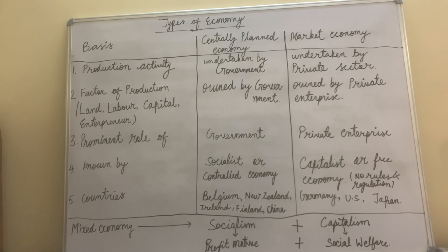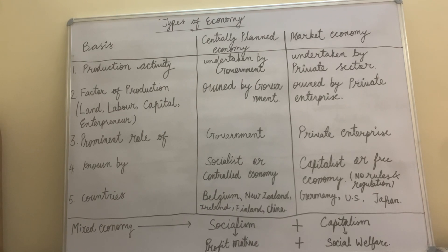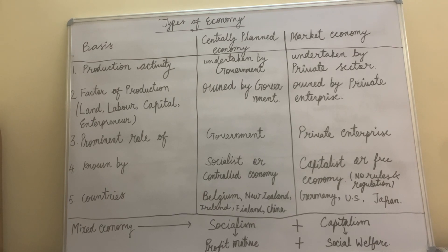We will start with the differentiation at the first point: production activity. Centrally planned economy is a kind of economy where the government's role is maximized and the private sector's role is minimal, even negligible. And market economy is a kind of economy where the private sector plays a huge role, and the government's role is very limited. So the first point is production activity.